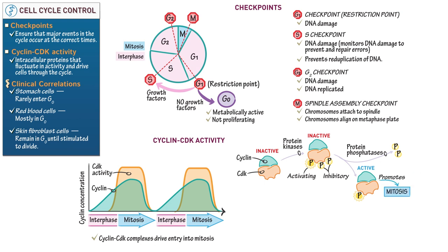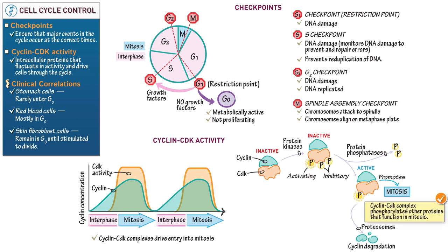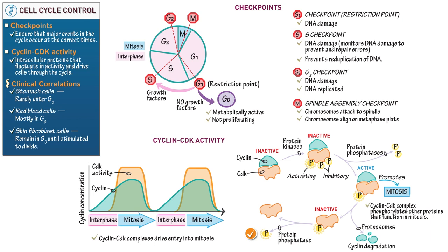Illustrate that proteasomes degrade cyclins at the end of mitosis — cyclin concentrations rise throughout interphase and fall rapidly at the end of mitosis. Active cyclin-CDK complexes phosphorylate other proteins that function in cell cycle events, ranging from chromosome condensation during interphase to spindle formation during mitosis. A CDK protein without cyclin is inactive; another phosphatase removes the final phosphate. Then another cyclin binds CDK and the cycle begins again. Many cyclins and CDK complexes exist, each coordinating different events in the cell cycle.